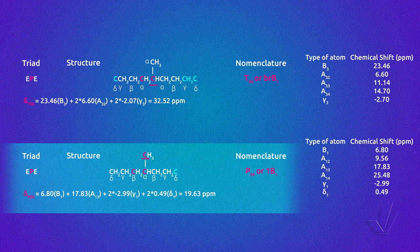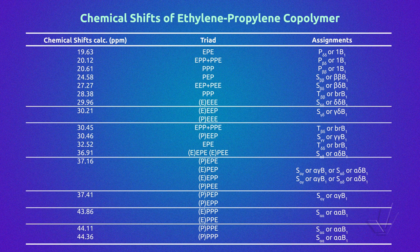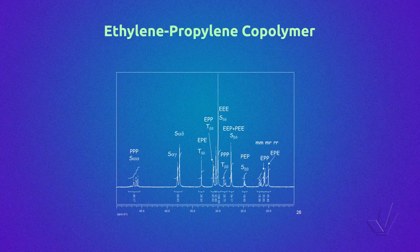Now that we have calculated all the chemical shifts of the carbon atoms representing all the triads, we are in a condition to make a table. In this table we have in the first column the calculated chemical shift in ppm, in the second the triads that have carbons at those chemical shifts, and in the third the carbon atoms related to those chemical shifts, represented by two different nomenclatures. Here we have an example of an ethylene-propylene spectrum with the experimental chemical shifts. Analyzing the spectrum in detail, we can see that the region of the methyl carbon between 19–22 ppm has more peaks than expected by our calculations.